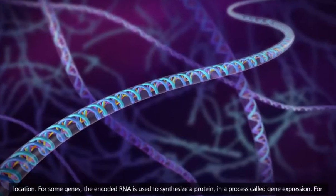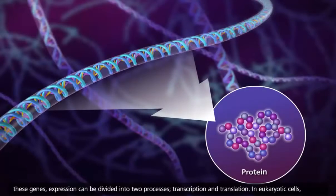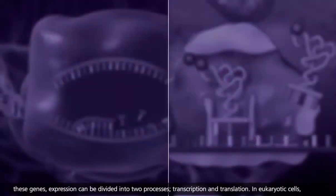For some genes, the encoded RNA is used to synthesize a protein in a process called gene expression. For these genes, expression can be divided into two processes: